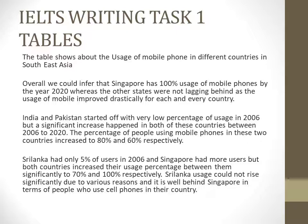India and Pakistan started off with a very low percentage of usage in 2006, but a significant increase happened in both of these countries between 2006 to 2020. The percentage of people using mobile phones in these two countries increased to 80% and 60% respectively.